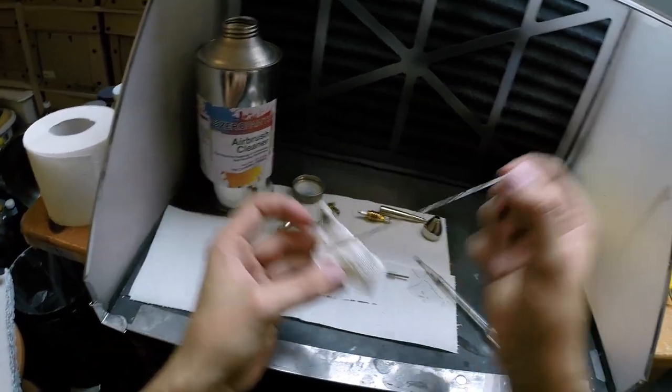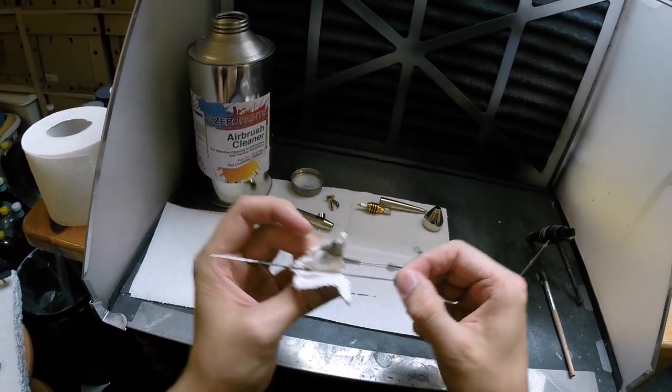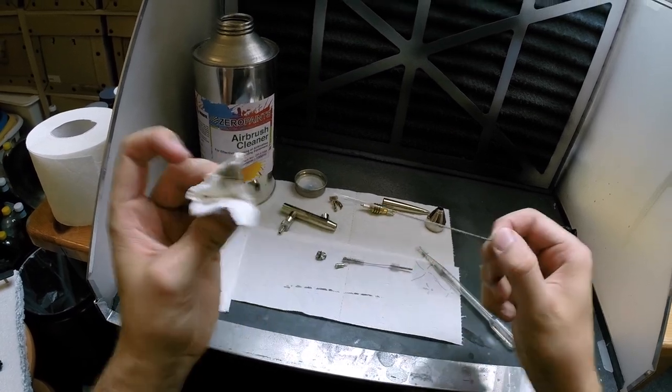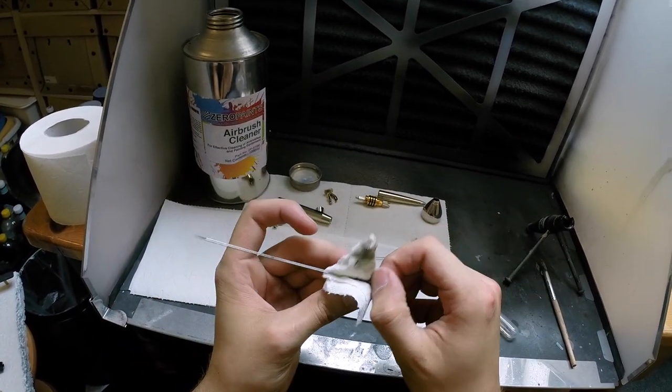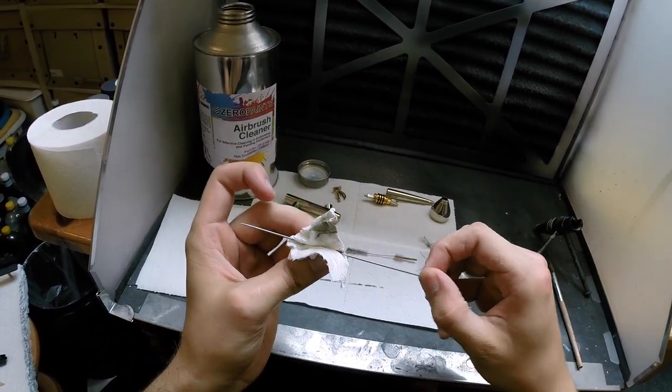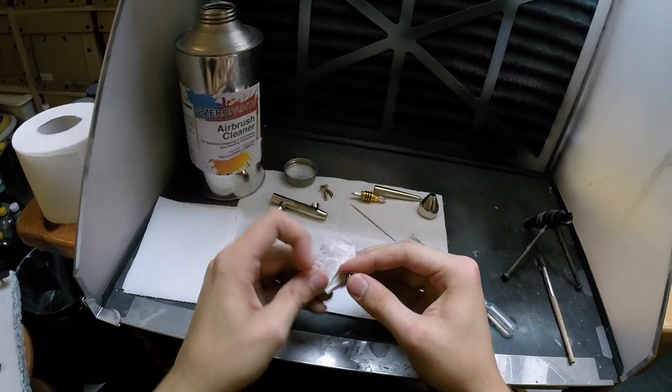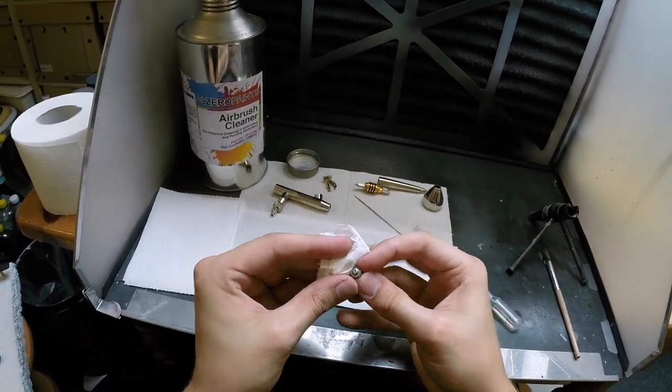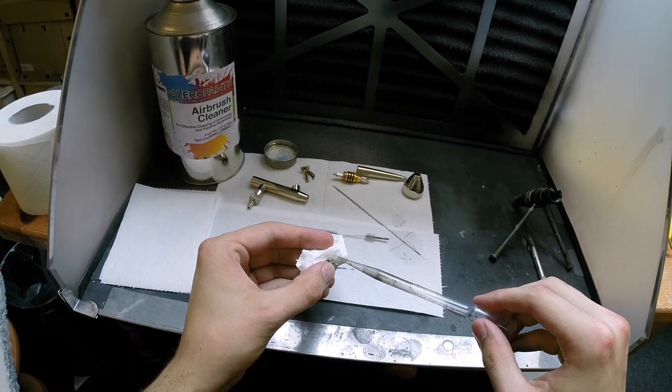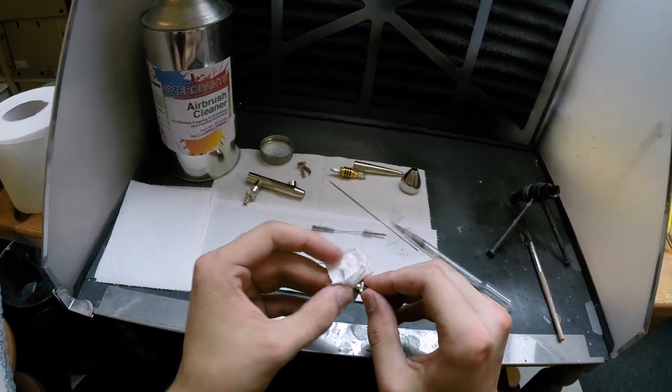I'm just moving over to a fresh area on the paper towel, applying some more of the airbrush cleaner and cleaning off the needle. And again, moving on to a fresh piece on the paper towel and putting some fresh airbrush cleaner on there to move on to the next part.